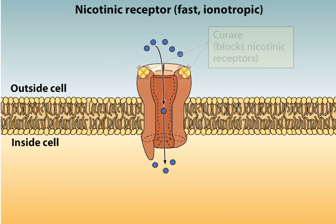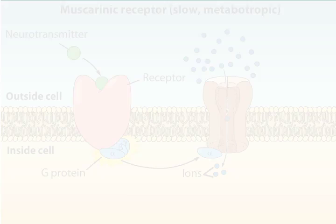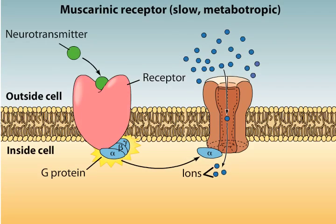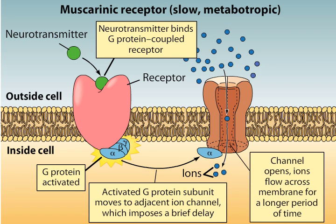The drug curare, once used as an arrow poison by South American Indians, blocks nicotinic ACH receptors. Because the synapses between nerves and skeletal muscles are nicotinic, curare paralyzes all skeletal muscles, including those used in breathing. Muscarinic receptors are G-protein coupled metabotropic receptors, so they have slower responses when activated and they can be either excitatory or inhibitory.